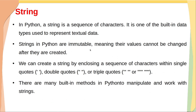Before proceeding further, let's see what a string is. In Python, a string is a sequence of characters. It is one of the built-in data types used to represent textual data. Strings in Python are immutable, meaning their values cannot be changed after they are created. We can create a string by enclosing characters within single, double, or triple quotes. There are many built-in methods to manipulate and work with strings.